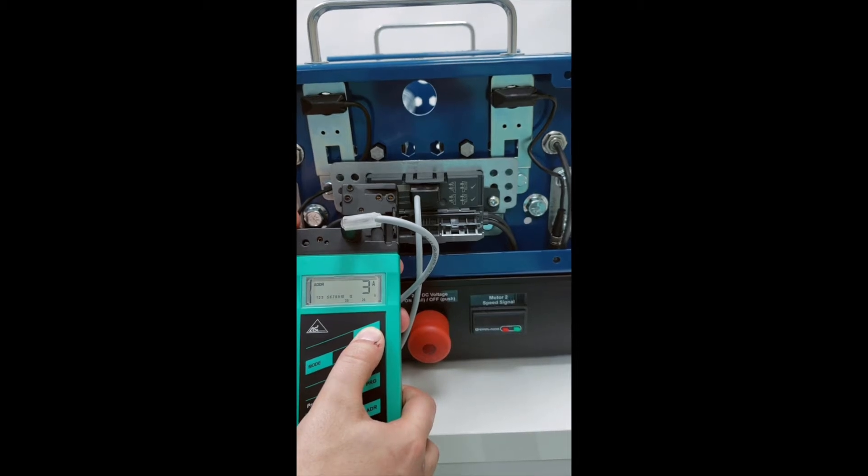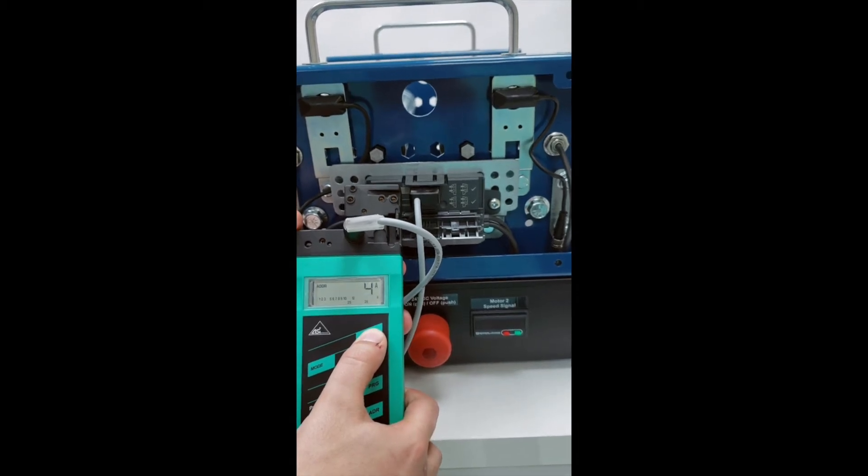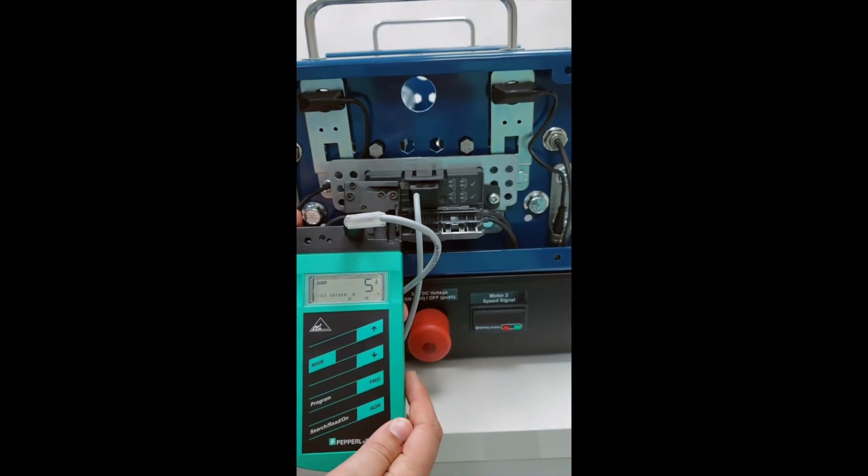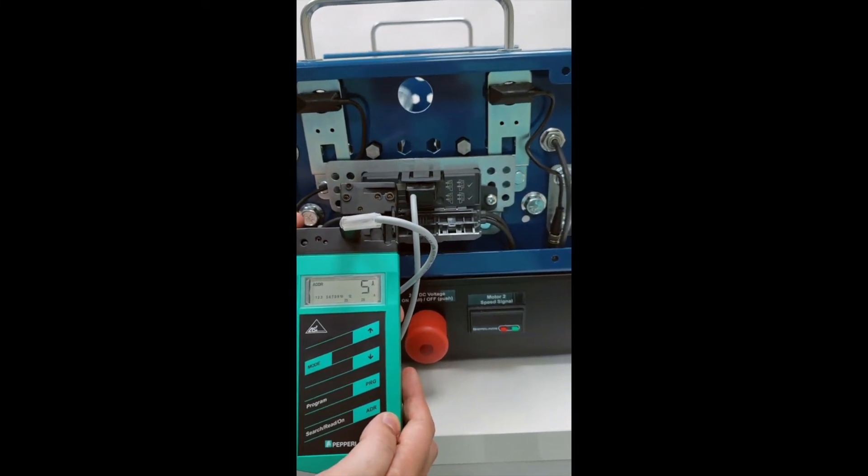An A may appear on the handheld indicating the module is half addressable and thus supports A and B addressing. We will set the module address to 5A.